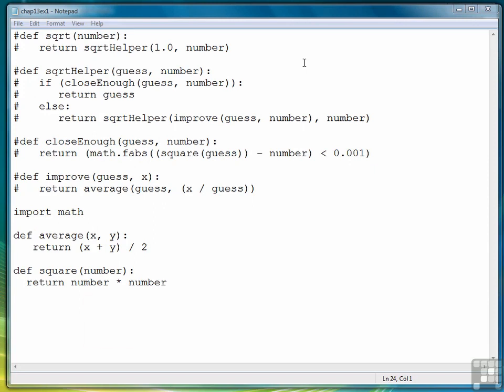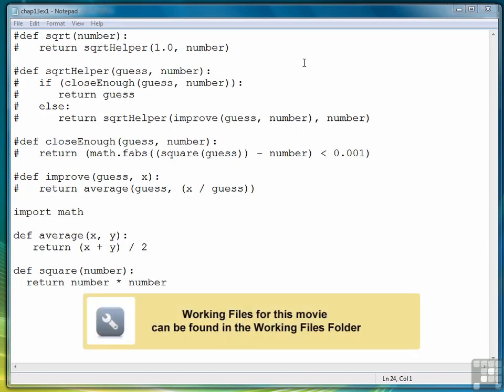In the first part of the exercise, we implemented Newton's method for finding the square root of a number by designing several functions to implement the algorithm.